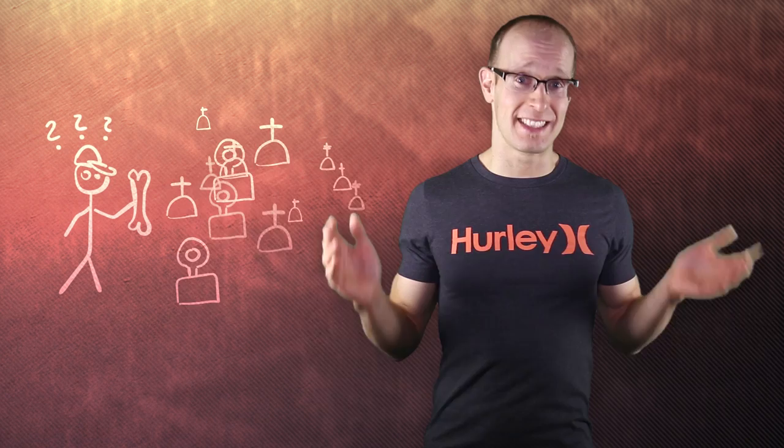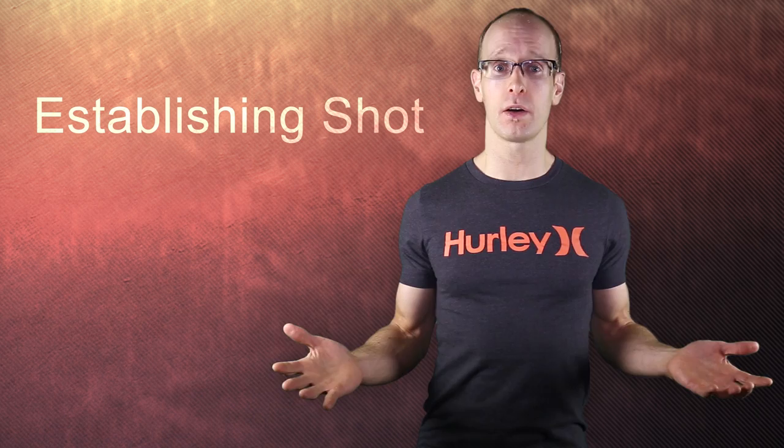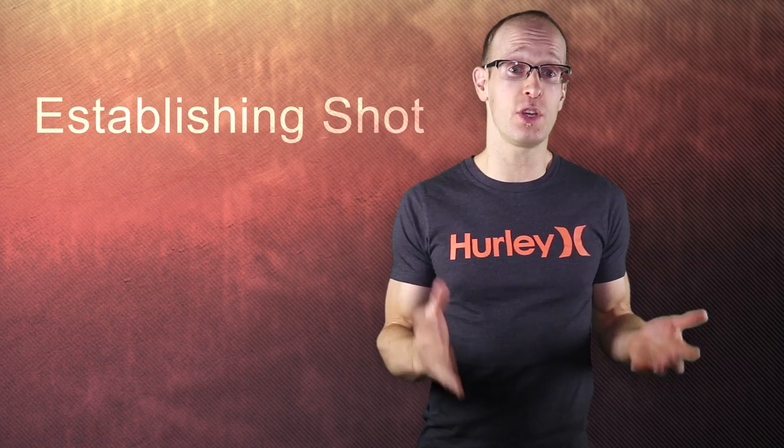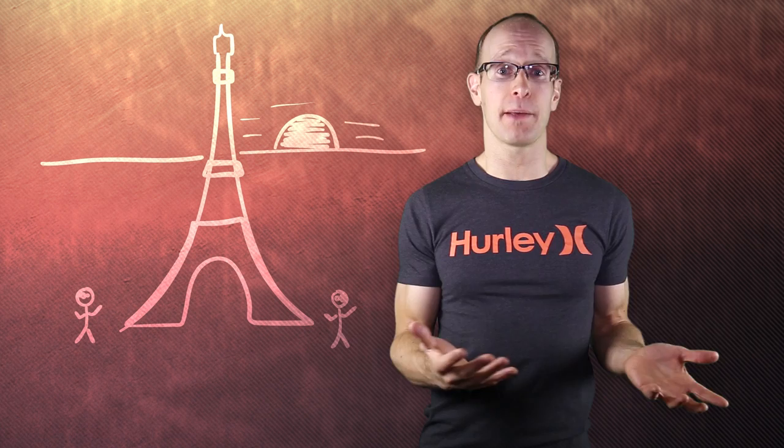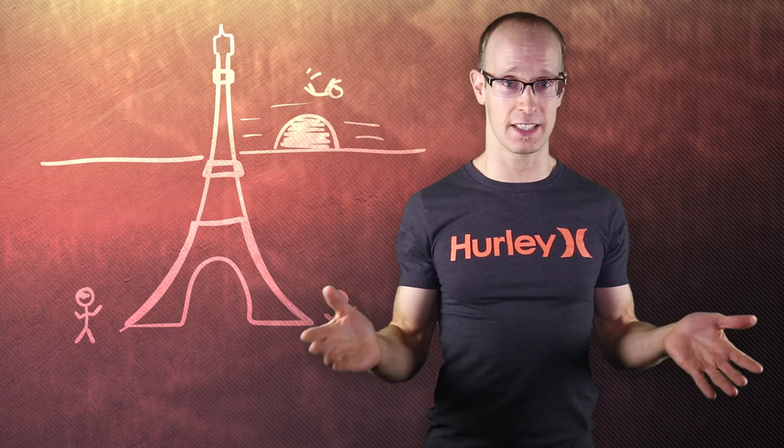One of the most powerful tools to reveal the space within your film to your viewers are establishing shots. Establishing shots are usually extremely long — also known as very, very zoomed out shots — used at the beginning of a new scene to introduce the viewer to important information such as the location, the time of day, and where all of the key elements and characters are positioned in relation to each other. It establishes the context for the scene, hence the name.